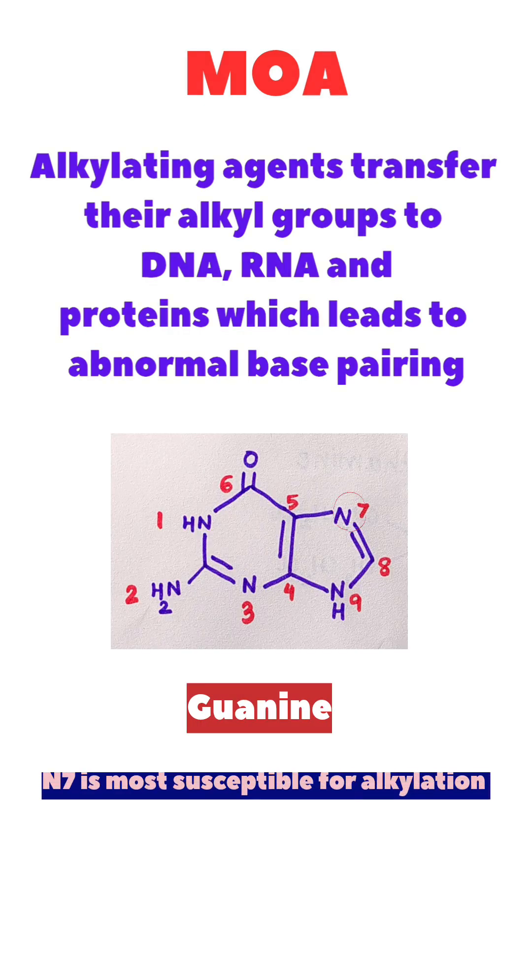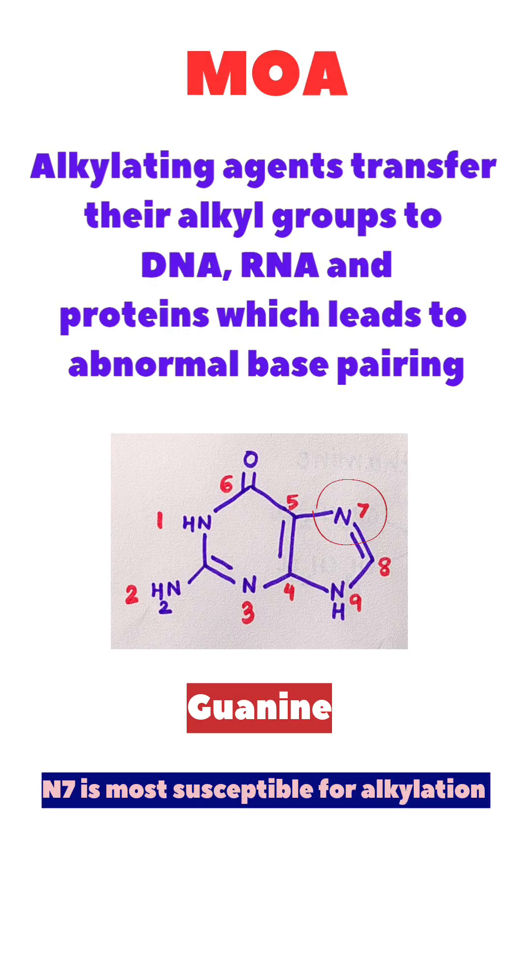Alkylating agents transfer their alkyl groups to DNA, RNA, and proteins, which leads to abnormal base pairing. N7 of guanine is most susceptible for alkylation.